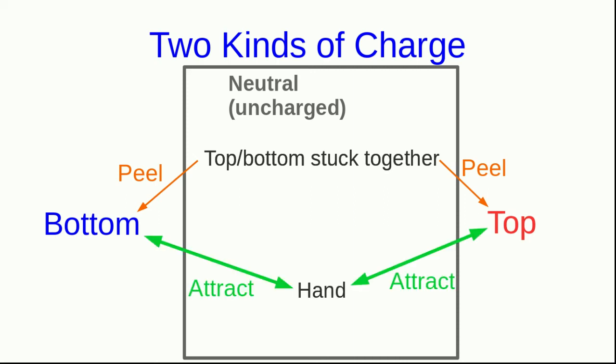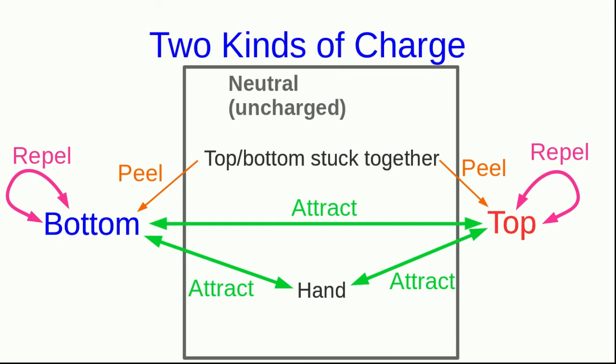Now, both of those are attracted to neutral things like your hand, and so we conclude that they're both charged. However, their charges are different somehow, because bottom pieces always repel other bottom pieces. Top pieces always repel other top pieces. But bottom and top pieces attract each other. And so the charge on the bottom pieces must be a different kind of charge from the charge on the top pieces. We've got two kinds of charge here.